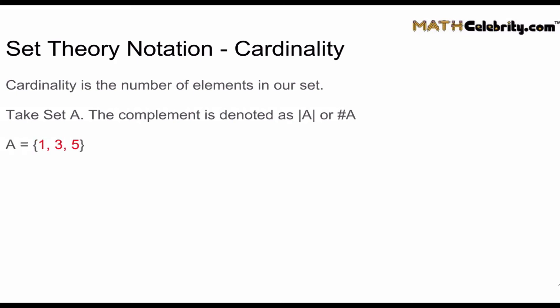So let's take set A as one, three, five. I'm sorry, I said complement before, it's the cardinality. The cardinality of A is three because set A contains three elements: one, three, and five.